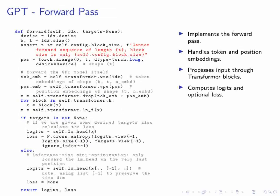The forward method of the GPT class defines how the model processes input tensors IDX (indices) and optionally targets. We begin by getting the device of the input tensors and unpacking the batch size B and sequence length T. An assertion ensures that the sequence length doesn't exceed the block size. Position indices are generated for the sequence length, and the input indices are converted to token embeddings using the WTE layer. Position embeddings are obtained using the WPE layer, and dropout is applied to the sum of token and position embeddings. The input is then processed sequentially through each transformer block. Final layer normalization is applied, and if targets are provided, the LM_head layer projects the output to the vocabulary size and cross-entropy loss is computed. The method returns the logits and the optional loss.